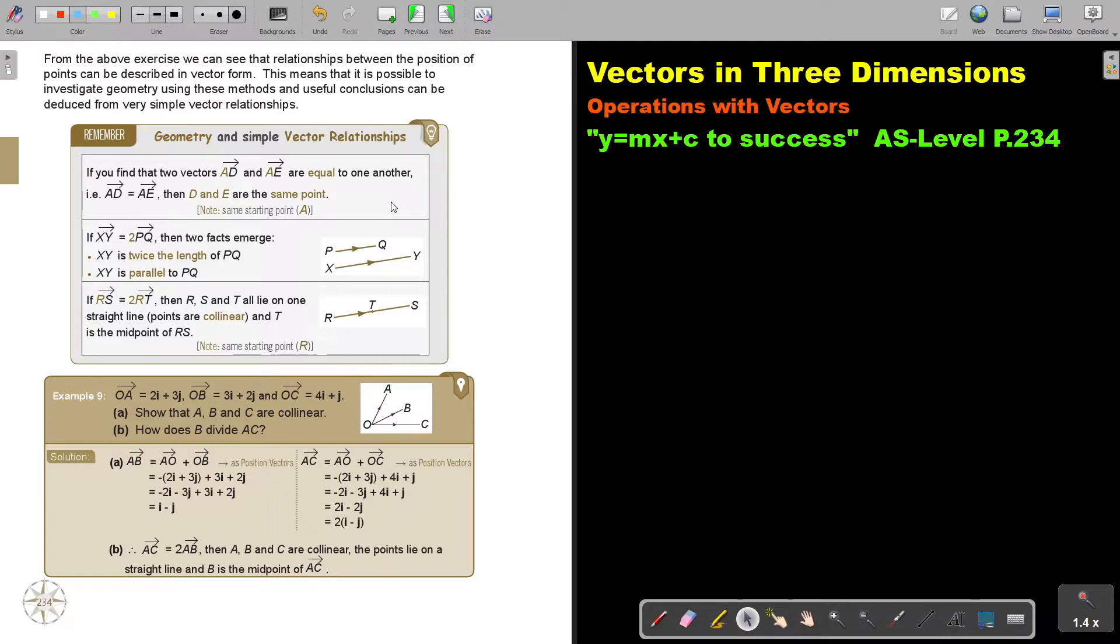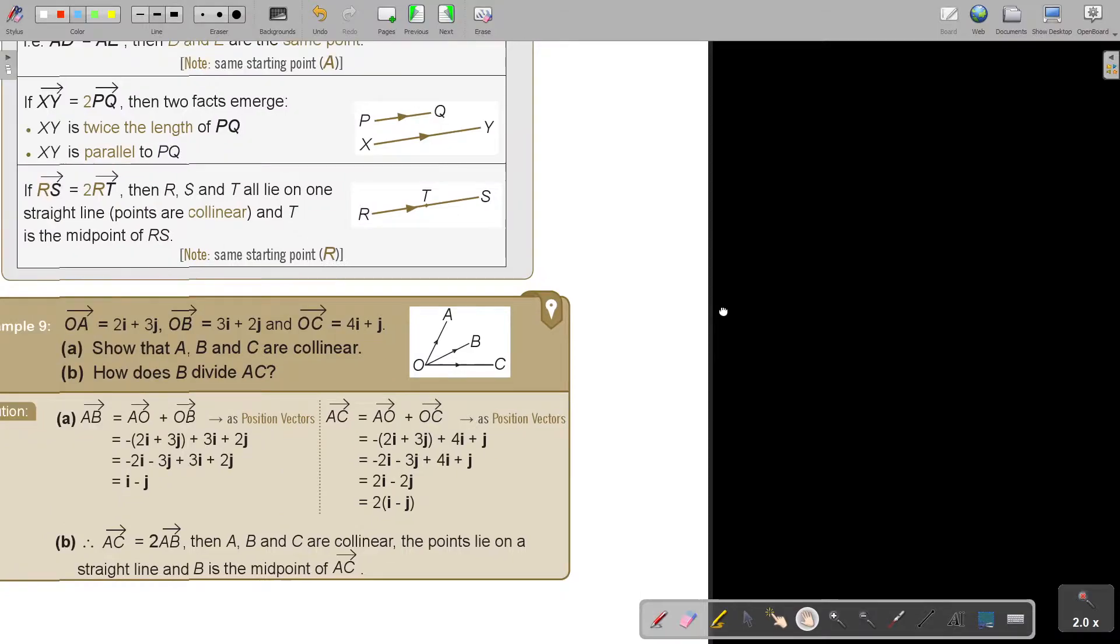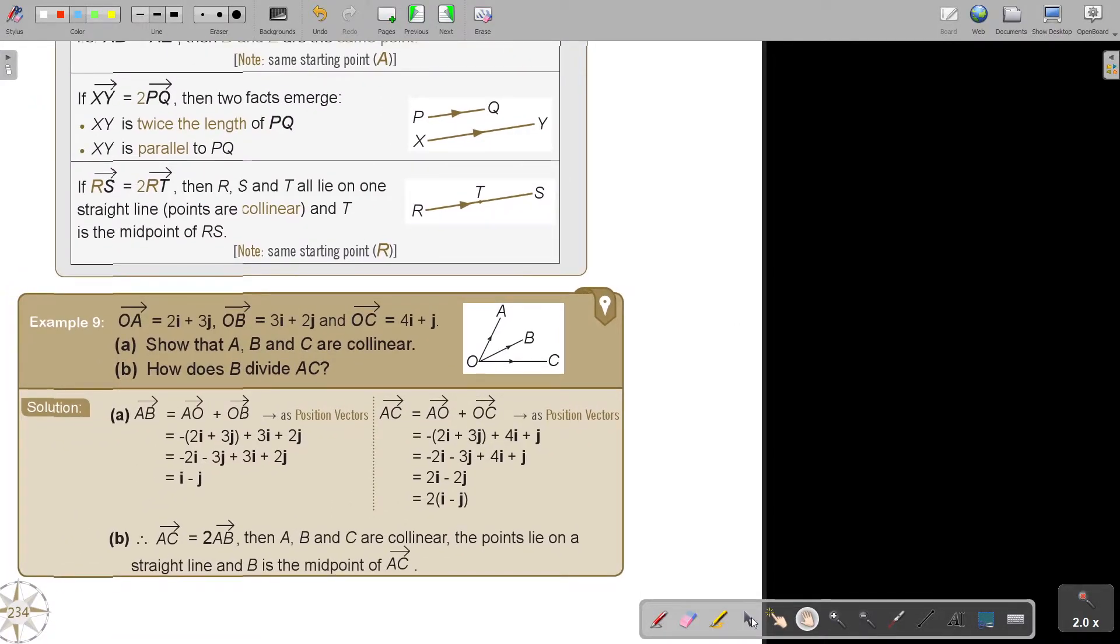Now let's look at an example. OA equals 2i plus 3j. OB equals 3i plus 2j. And OC equals 4i plus j. Show that A, B, and C are collinear. A, B, and C. That means that they are on a straight line. So let's start.